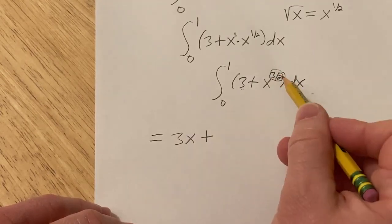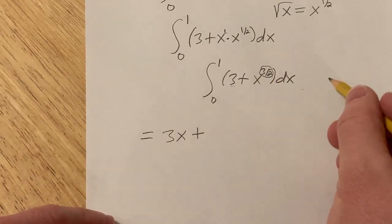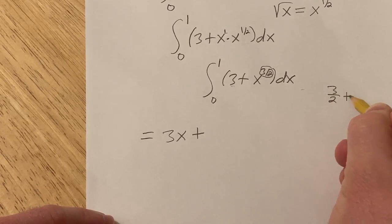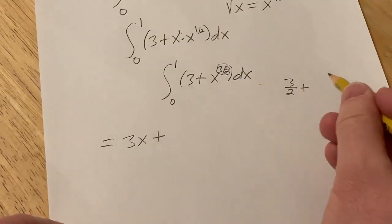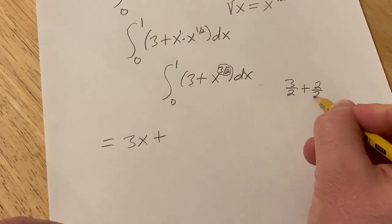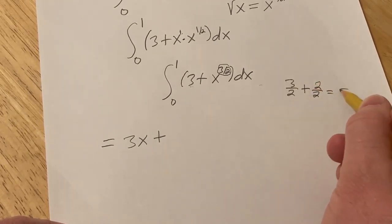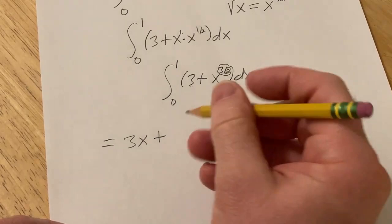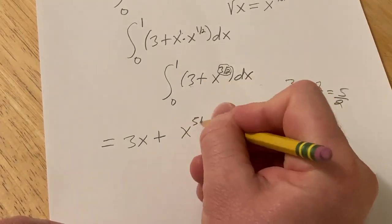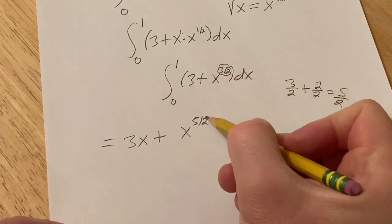We're basically taking 3/2 and adding 1, which you want to think of as a number over 2, so 2/2. That way you can add straight across: 3 plus 2 is 5, so this will be x to the 5/2. The formula says you add 1 to the result and then divide by the result.